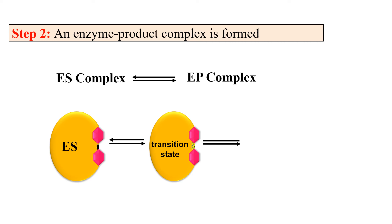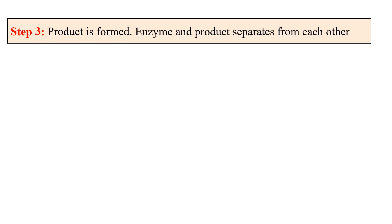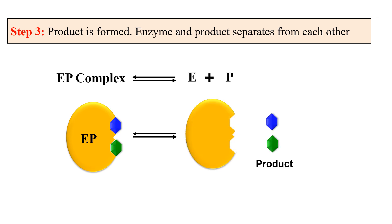The transition state is that state in which there is equal probability that either the product will be formed or the substrate will be released as it is from the enzyme — meaning the reaction may proceed in either direction. If the reaction crosses this transition state, it will ultimately reach the enzyme-product complex. The product has been formed and it will be released from the active site of the enzyme, leaving the enzyme free.